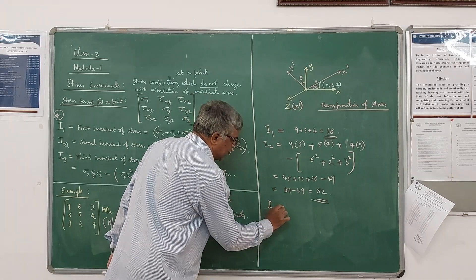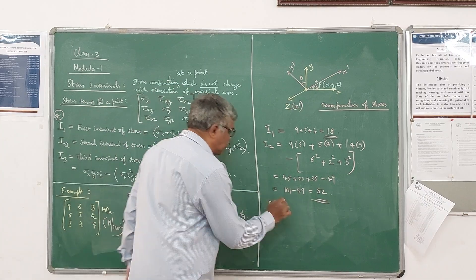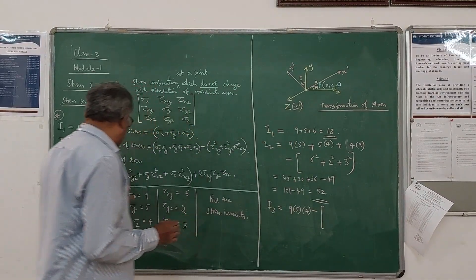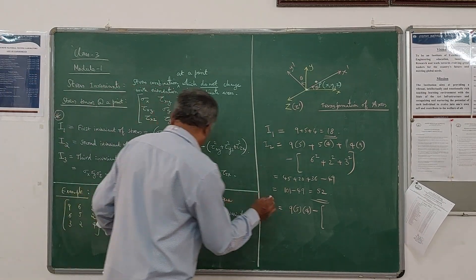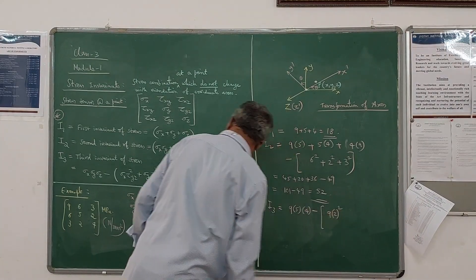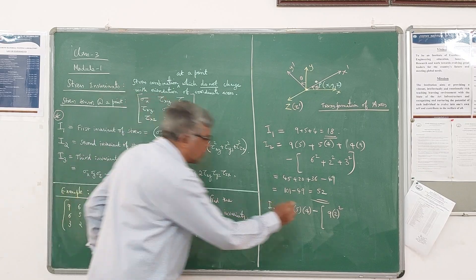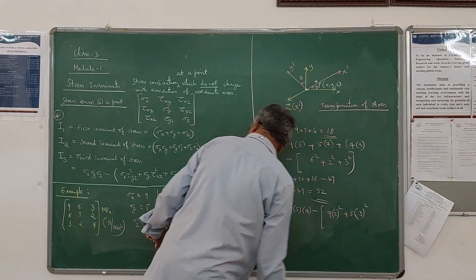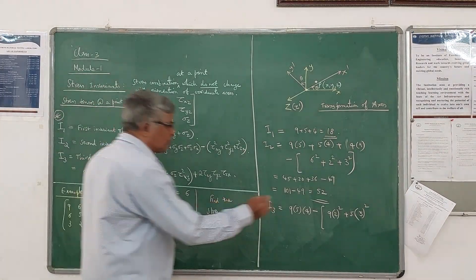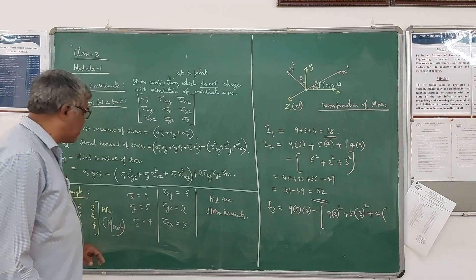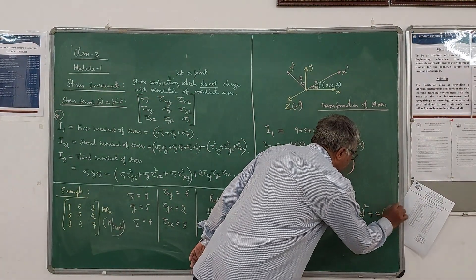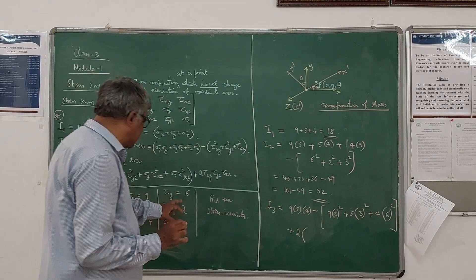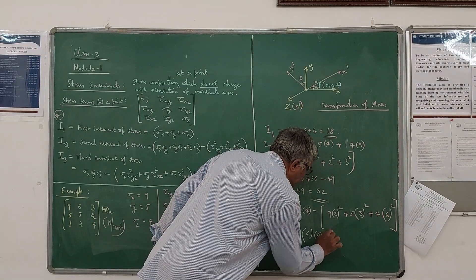Next term, I3: sigma x is 9, into 5 into 4. Then minus one, finding sigma x plus 2 tau squared yz, so 9 into 2 squared. Plus sigma y is 5, into 5 into tau squared zx, that is 3 squared. Then plus sigma z is 4, into tau xy squared, 6 squared. Then plus 2 times tau xy times tau yz times tau zx equals 6 into 2 into 3 equals 27.